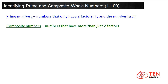You can also think of factors as numbers that, when multiplied together, equal a certain number. For example, 16: 2 times 8 gets you 16, so 2 is a factor of 16.